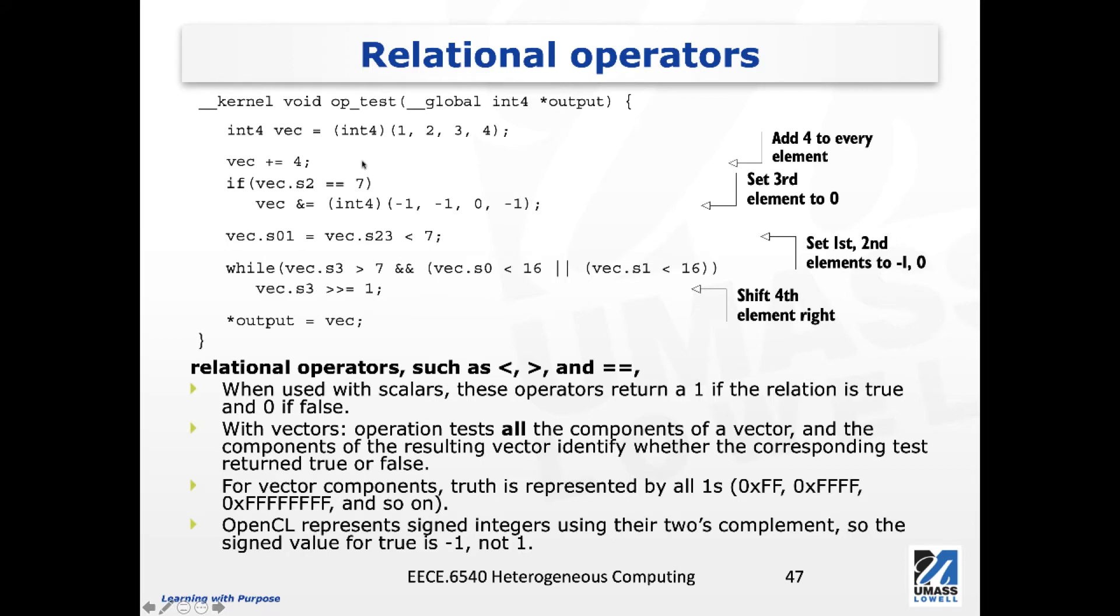So let's look at this example. We have a kernel function called opt_test. It takes one argument, an integer vector of 4 elements, and its output memory object is in global memory. We first declare a private vector called vec, and we initialize this vector with the initial values 1, 2, 3, and 4.